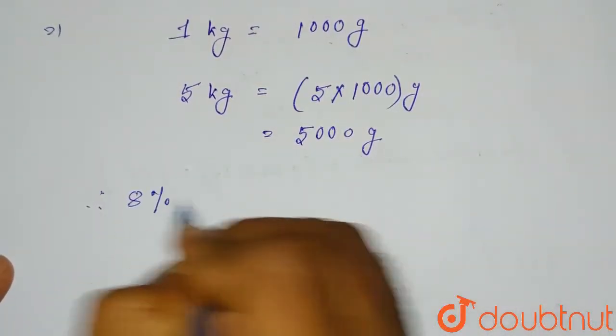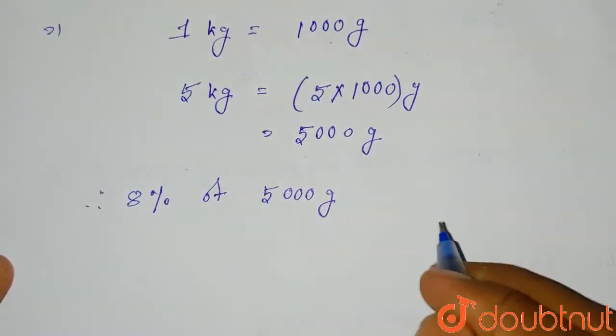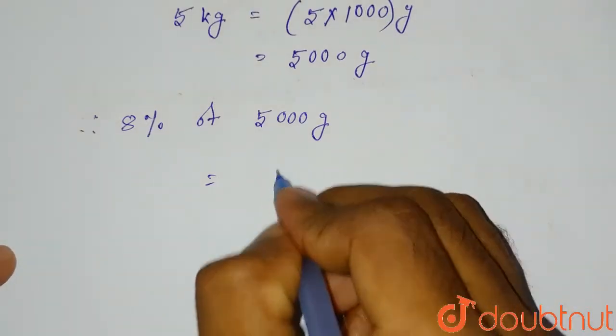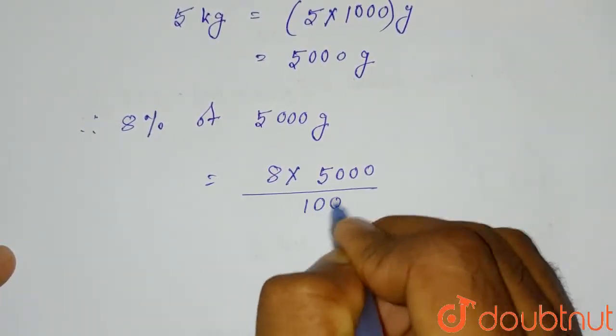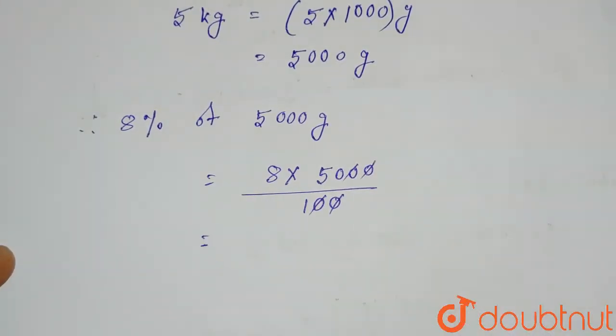we can write that therefore 8 percent of 5000 gram, this value will be equals to 8 multiplied by 5000 divided by 100. So this 00 will be cancelled, so this will be equals to